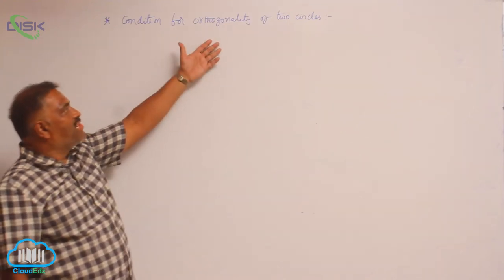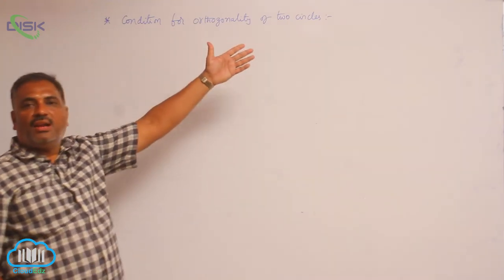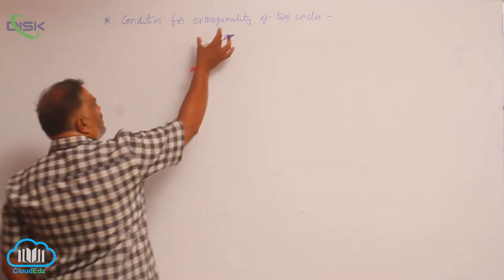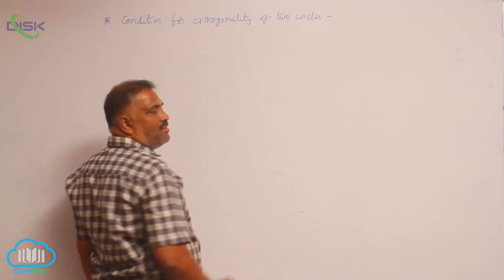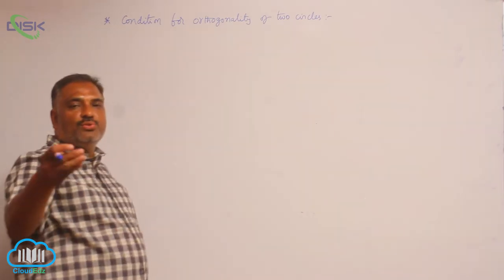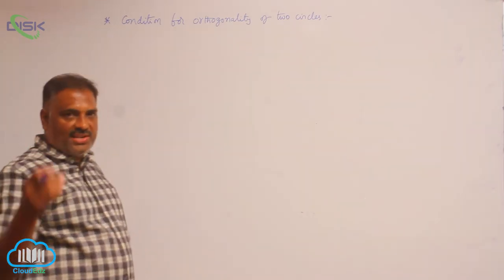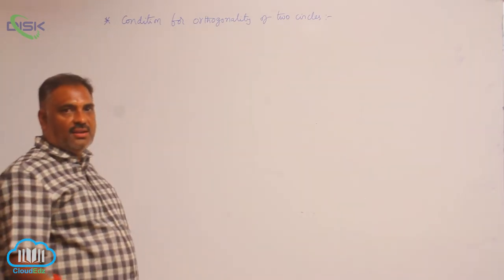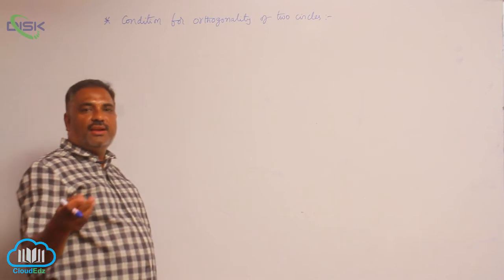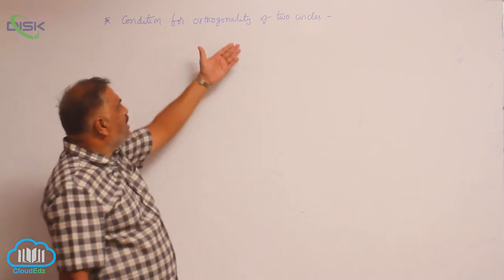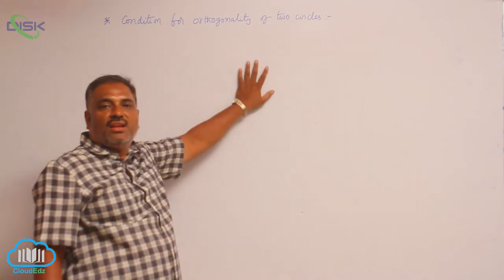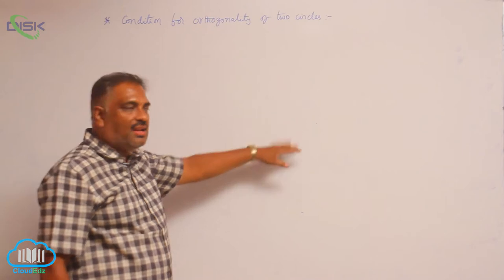We will discuss the condition for orthogonality of two circles. Orthogonality means when the angle between the two circles is 90 degrees, or they are intersecting at a right angle, then you say that the two circles cut each other orthogonally.